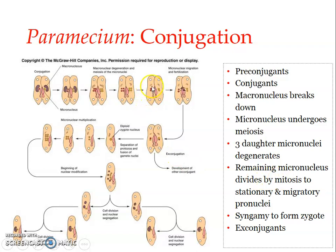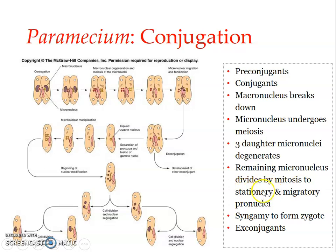The remaining haploid micronucleus then divides by mitosis, producing two nuclei. These two new nuclei are unequal in size and are referred to as pronuclei. The larger one is called the stationary pronucleus, and the smaller one is called the migratory pronucleus. The stationary pronucleus remains in its own mating type, while the migratory one can move across the protoplasmic bridge into the other mating type.